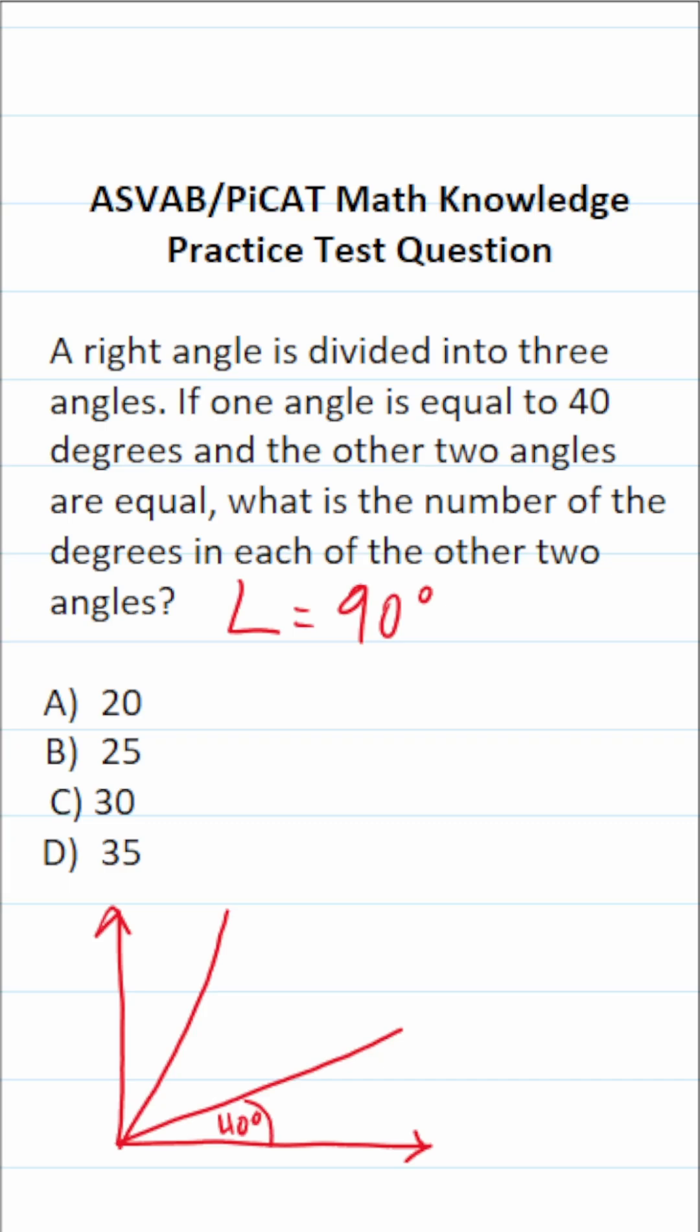That said, they are unknown. So this one is going to be x degrees. And likewise, this one is going to be x degrees. Why are they both x degrees? Because they're equal.